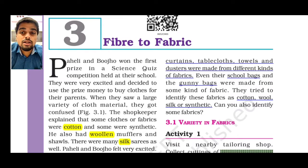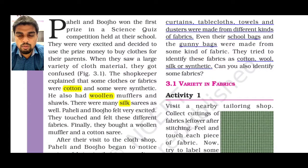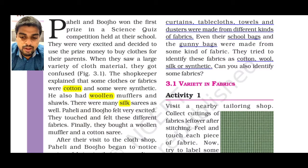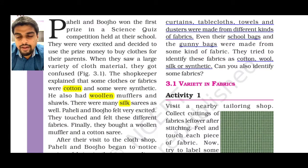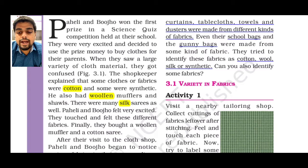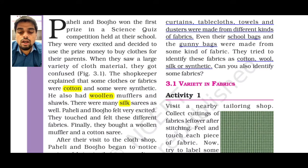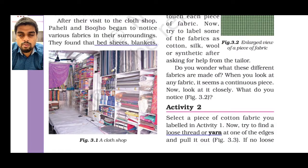The chapter starts with a story where Paheli and Bozo won a science quiz competition and used their prize money to buy clothes for their parents. They went to a clothes shop with a variety of fabrics. The shopkeeper explained there are natural and synthetic fabrics, including mufflers and shawls made of wool, and silk saris.